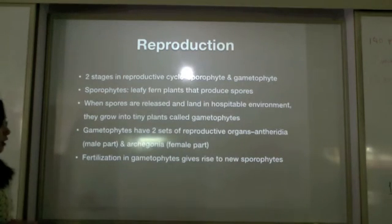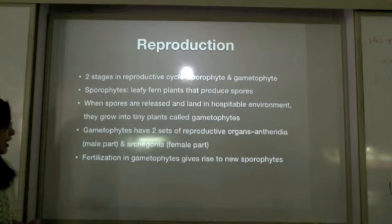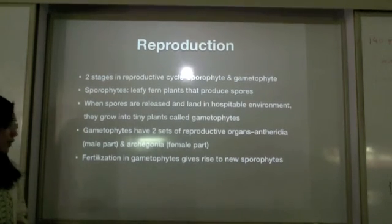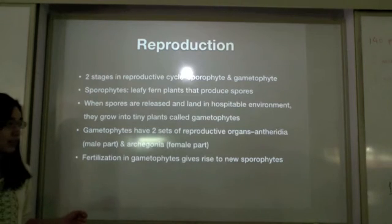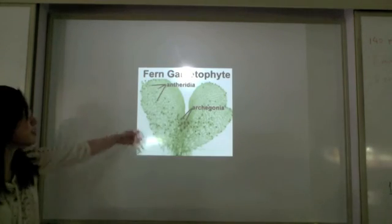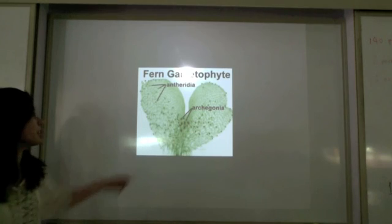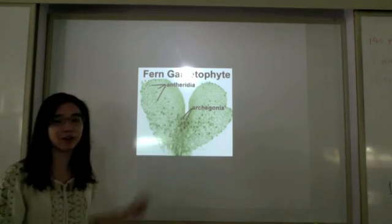Gametophytes have two sets of reproductive organs: a male part called the antheridia and a female part called the archegonia. Fertilization in gametophytes gives rise to new sporophytes.